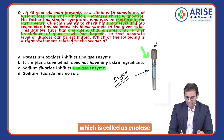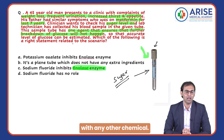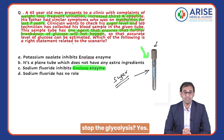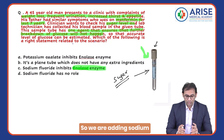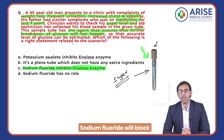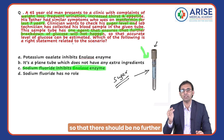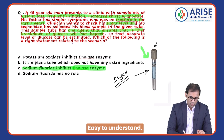If we block the enolase enzyme with a chemical, we can stop glycolysis. So we add sodium fluoride to the gray tube. Sodium fluoride blocks the enolase enzyme so there is no further glycolysis — easy to understand.